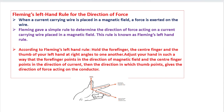Fleming's Left Hand Rule is used to determine the direction of current and the direction of force. Whenever a current-carrying conductor is placed in a magnetic field, we use Fleming's Left Hand Rule to decide the direction of force acting on that conductor.